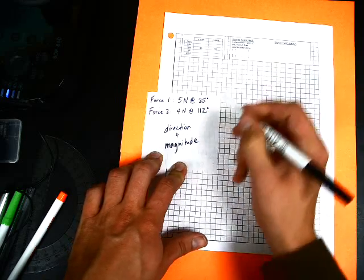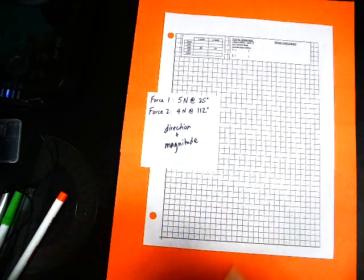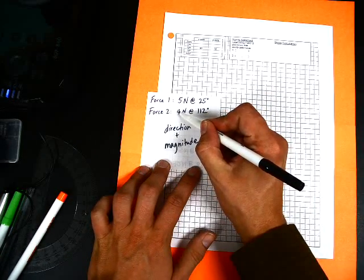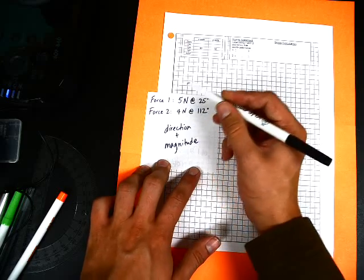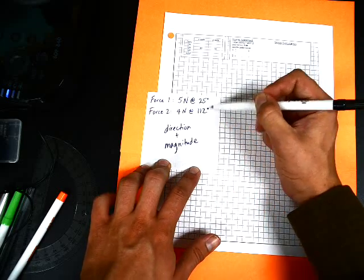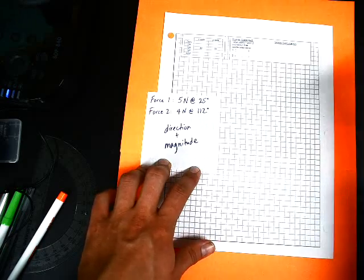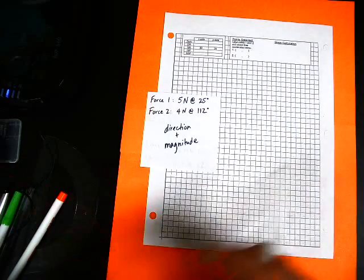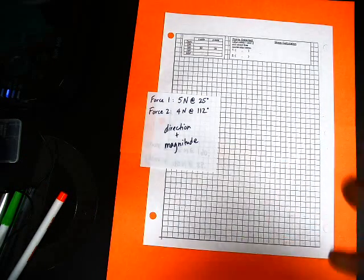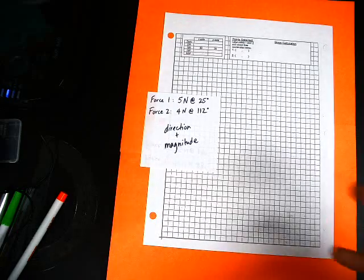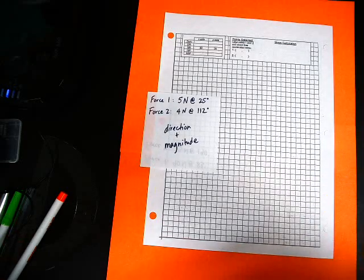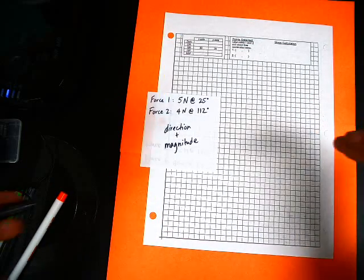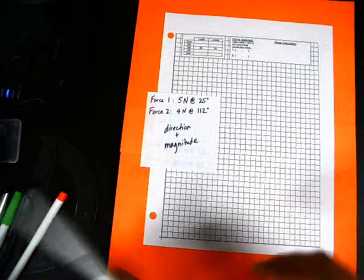In this case, the magnitude is the strength of that vector, like the magnitude of an earthquake. The strength of the vector, 4 newtons, 5 newtons, those are our magnitudes. The direction is the angle at which that strength, or that vector, is pointing. So whenever you're solving these, the goal is to find what the net force is, the combination of these two forces. That net force is a vector, so we're trying to look for both the direction and the magnitude of that net force.